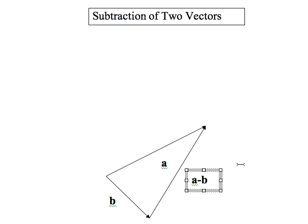So you can either flip one and add them normally, or you can put them tail to tail, and then A minus B will be the vector from B to A.